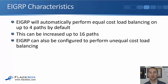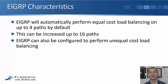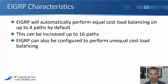EIGRP will automatically perform equal cost load balancing on up to four paths by default. You can manually increase that up to 16 paths if you want to. EIGRP is also the only routing protocol that can do unequal cost load balancing.